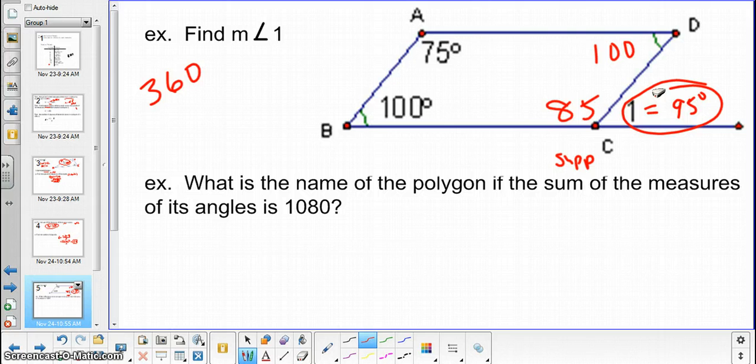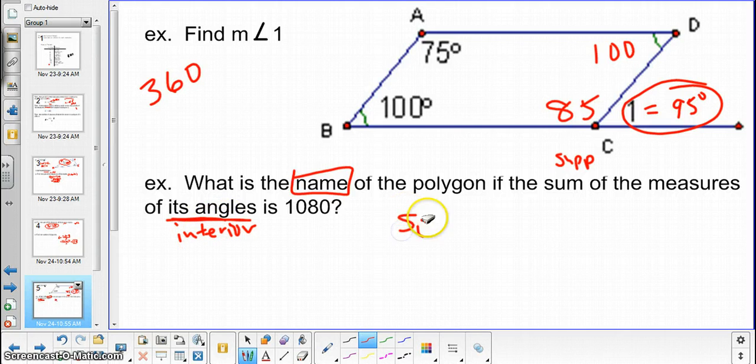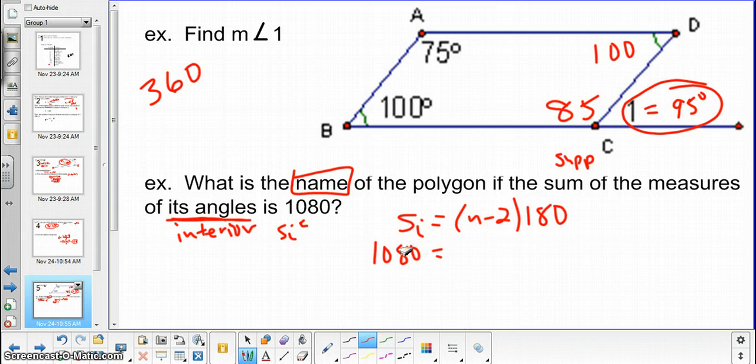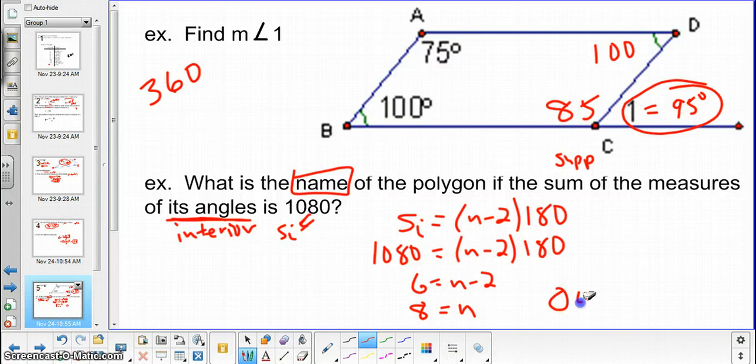Next, we have what is the name of the polygon if the sum of the measures of its angles is 1080. And again, it does not specify. Therefore, we do assume that they're referring to the interior angles. And we're looking for the name of the polygon, not the number of sides, the name. Therefore, since we're finding the interior angles, we will be using the formula quantity n minus 2 times 180. And now we know the sum. So that would be equivalent to 1080. And we're looking for n. So 1080 is equal to the quantity n minus 2 times 180. Divide each side by 180. Therefore, we get n equivalent to 8. And the name of the polygon with 8 sides is an octagon.